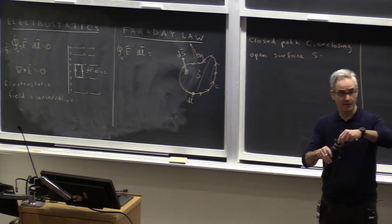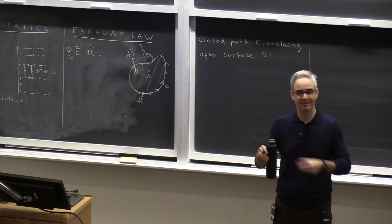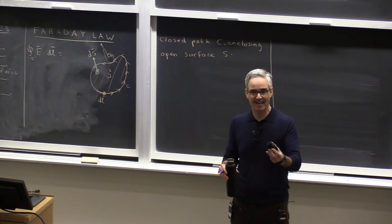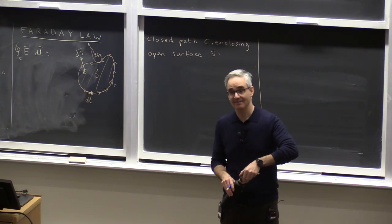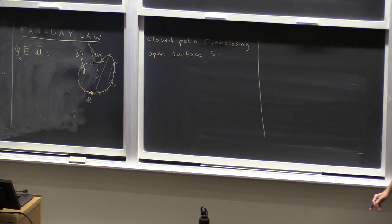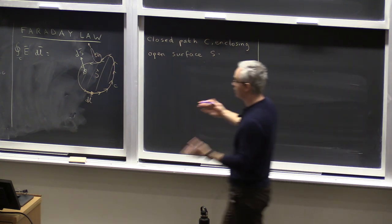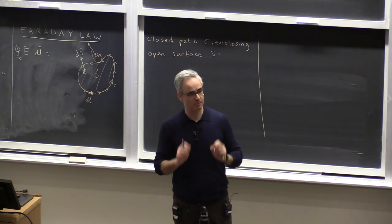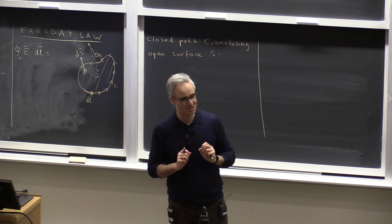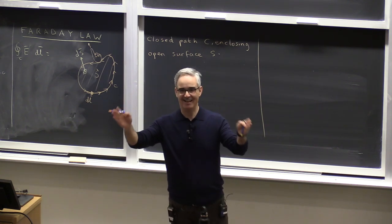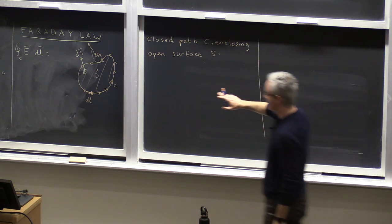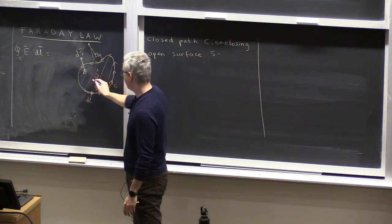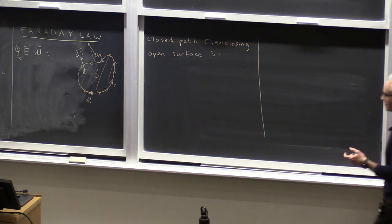A closed surface means something like a bottle. If you take away the lid, it becomes an open surface. Imagine there is a bug inside: if it can escape without poking the surface, then the surface is open; if it has to drill a hole to escape, the surface is closed — like closed cylinders or spheres from Gauss's law. This is distinct from the mathematical notion of open and closed sets.